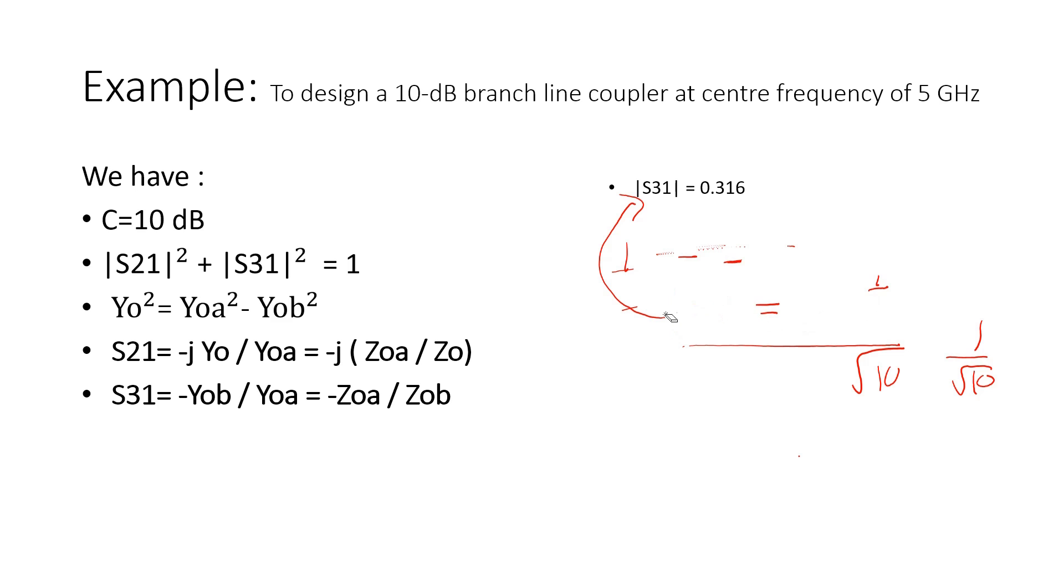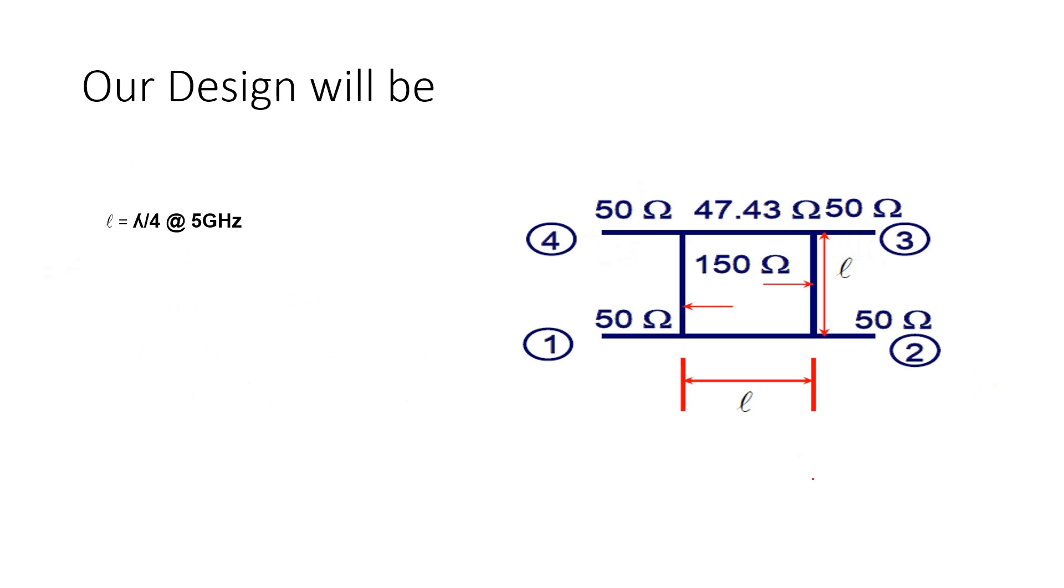Now we want S21. And we can use this formula. And from this formula, we will get S21 is 0.949. Just check yourself. And using this equation, you will get ZOA equal to 47. ZOA nothing but 1 by YOA. Then ZOB is 1 by YOB. What do you need more? We got everything actually. We need nothing more. And this is your design. You got 47.5. You are getting this impedance for these two is 150.